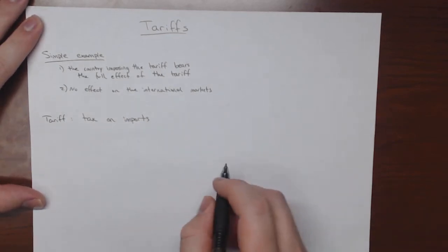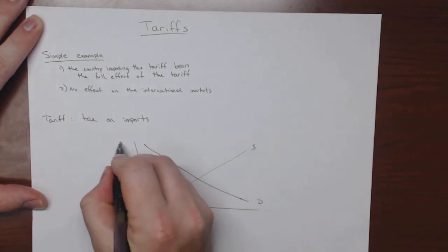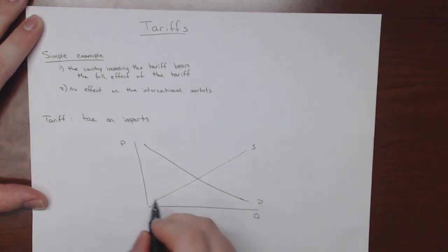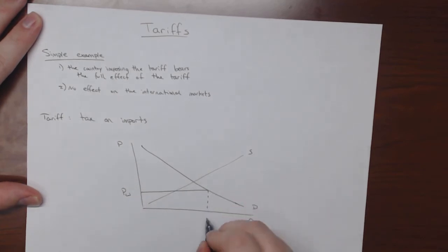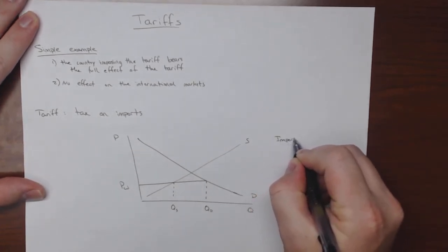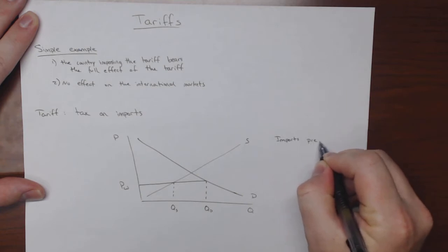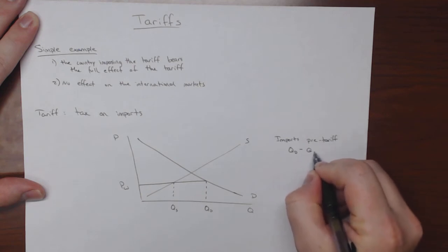Now let's start with just a simple graph or simple market. Demand and supply. We have price. We have quantity. And let's just say that we have a world price. We'll put it right there. And this gets us a domestic quantity demand and a domestic quantity supply. And so imports, as always, as they were last time...